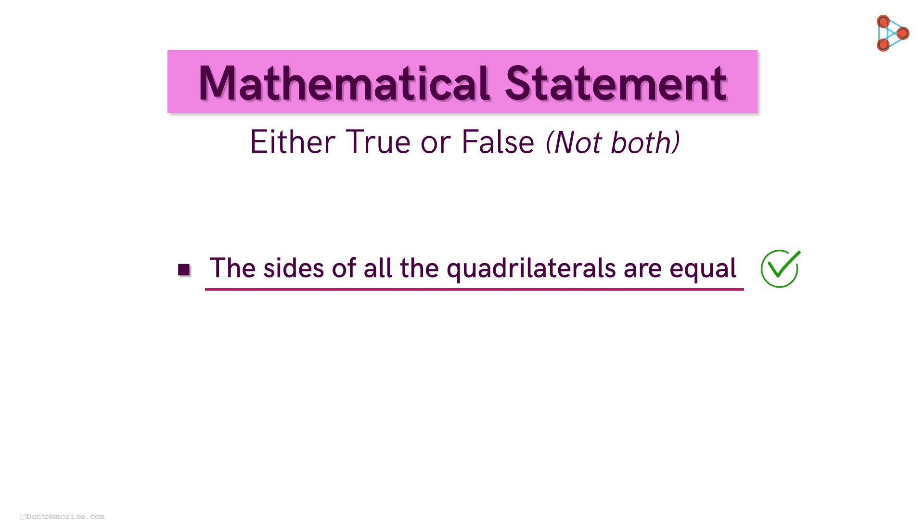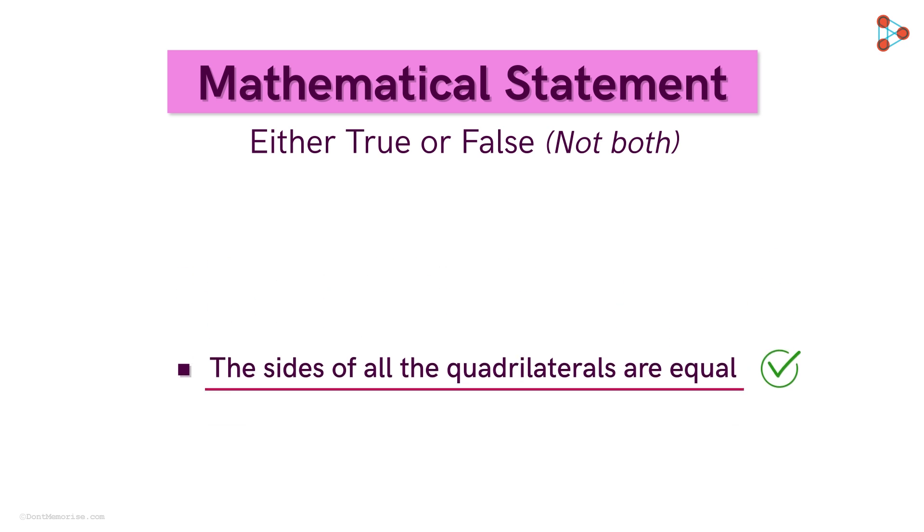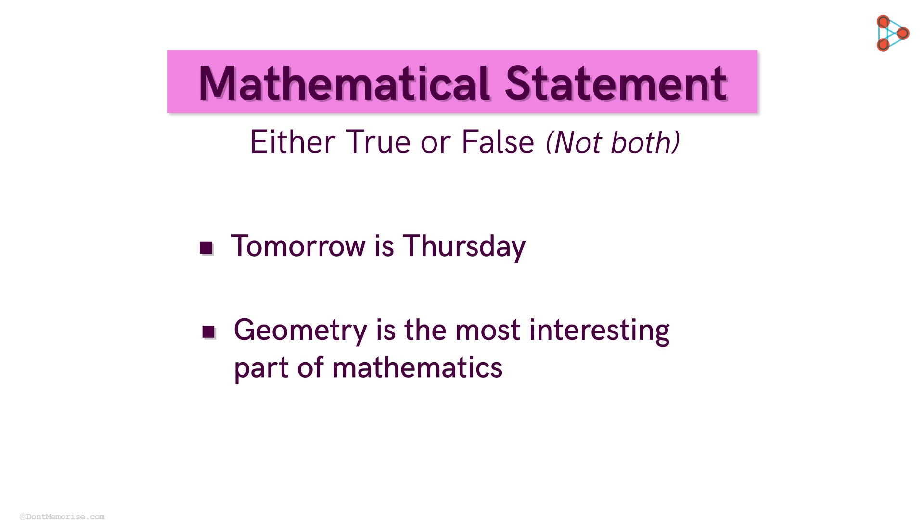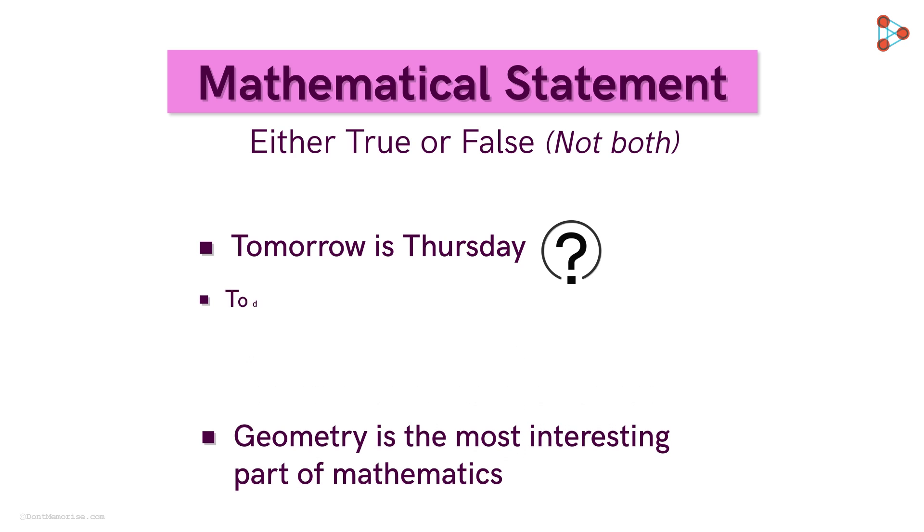Okay, now for the final two examples. Here they are. Is this one a mathematical statement? We should know that statements involving variable time such as today, tomorrow, or yesterday are not considered to be mathematical statements. Why? This example, for instance, will be true only on Wednesday and not on any other day. So it may be true or false.